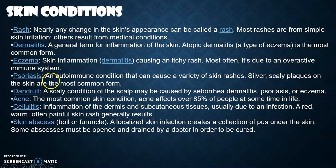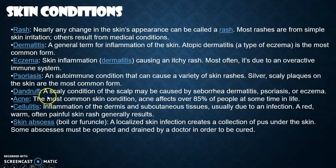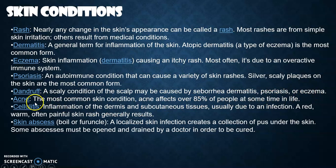Psoriasis is an autoimmune condition that can cause a variety of skin rashes. Silvery, scaly plaques on the skin are the most common form. Dandruff is a scaly condition of the scalp and may be caused by seborrheic dermatitis, psoriasis, or eczema. Acne is the most common skin condition, affecting over 85% of people at some time in life.